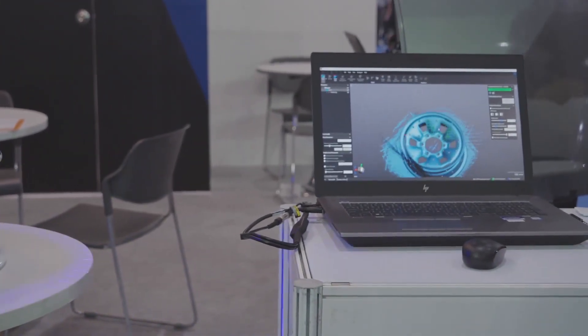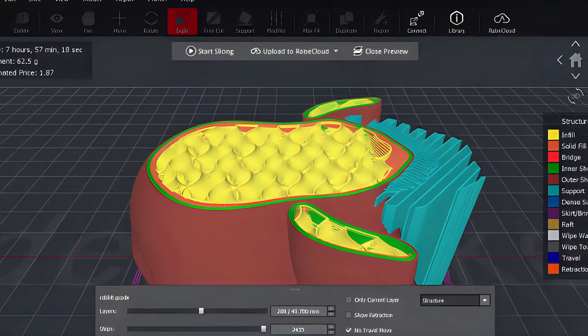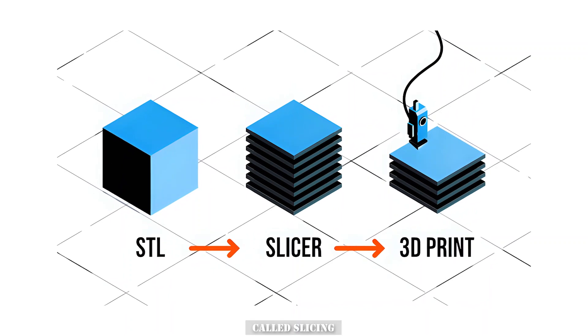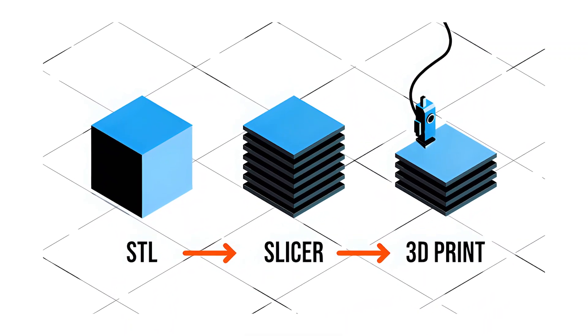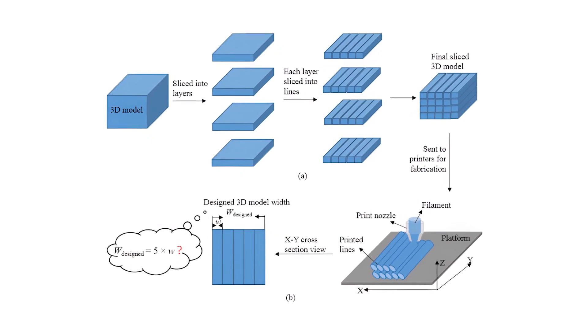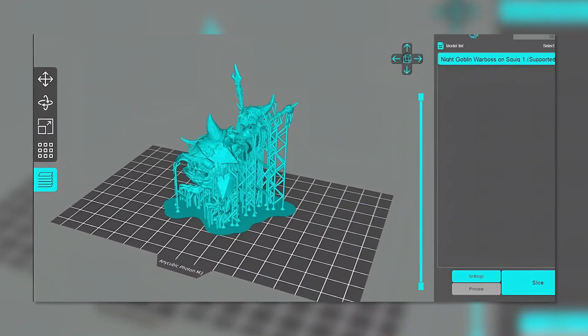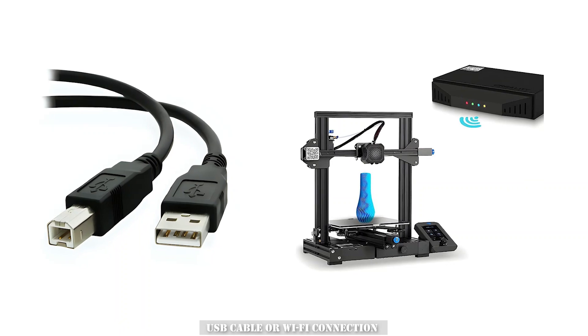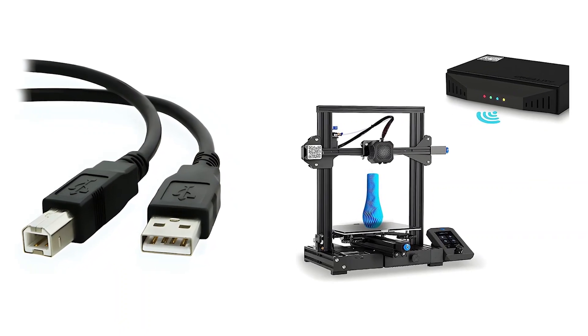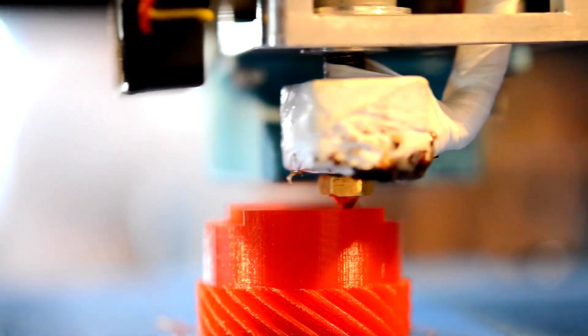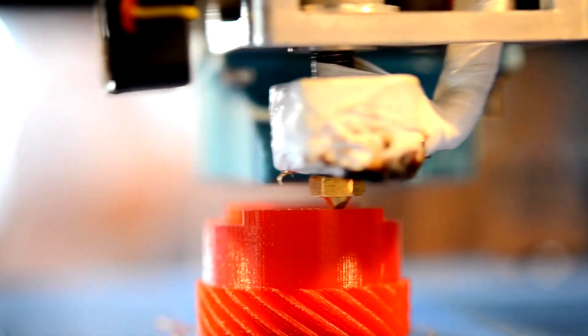Once the virtual model is made, it must be prepared for printing. This is done by breaking down the model into many layers using a process called slicing. Slicing takes the model and slices it into hundreds or even thousands of thin, horizontal layers using special software. After the model has been sliced, the slices are ready to be uploaded to the 3D printer. This is done using a USB cable or Wi-Fi connection. When the file is uploaded to the 3D printer, it reads every slice of the model and prints it layer by layer.